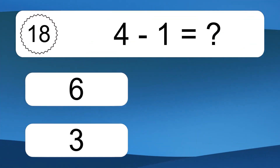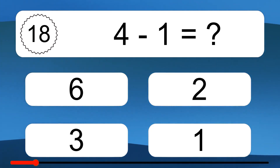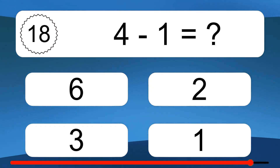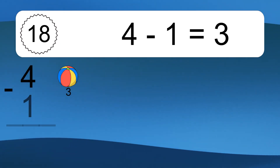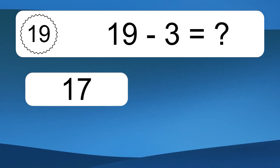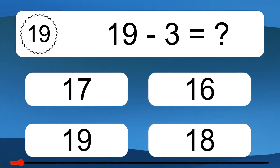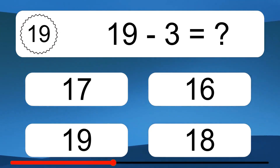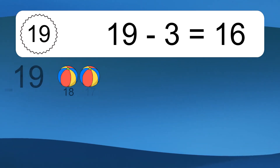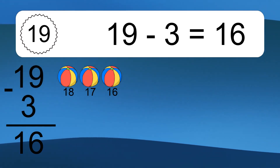4 minus 1 equals what? 4 minus 1 equals 3. Let's count it: 3. 19 minus 3 equals what? 19 minus 3 equals 16. Let's count it: 18, 17, 16.